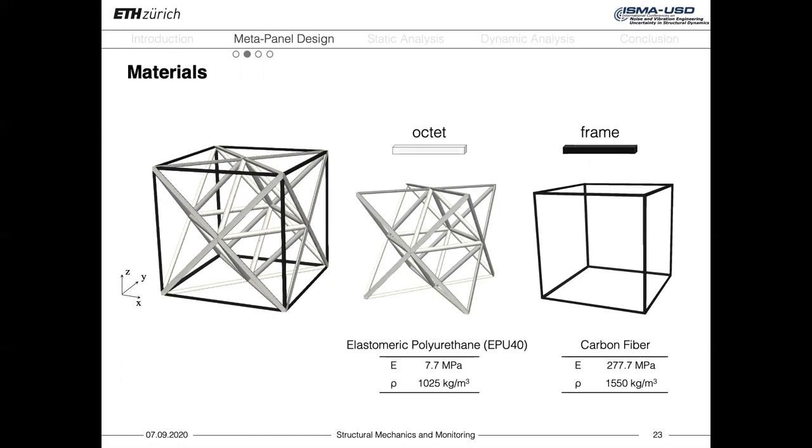For this reason, we also selected two different materials. The octet is made of elastomeric polyurethane, EPU40, a soft material that allows to attenuate vibrations below 100 Hertz. Whereas, the external cubic frame is made by carbon fiber, a stiffer material which is largely employed in the fabrication of truss structures in civil engineering.